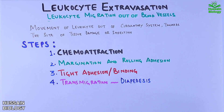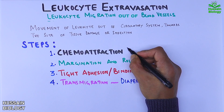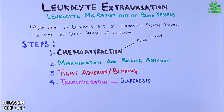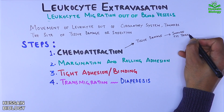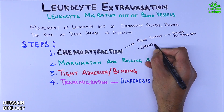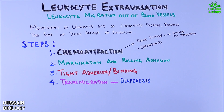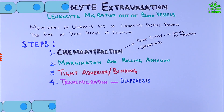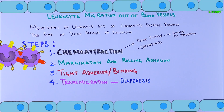Before getting into the mechanism in detail, let's have a quick look at these steps. First is chemoattraction — when there is tissue damage or presence of a pathogen, the immune system is triggered, which involves the release of different molecules in the form of cytokines like chemokines that mediate chemoattraction. The second step is margination and rolling adhesion.